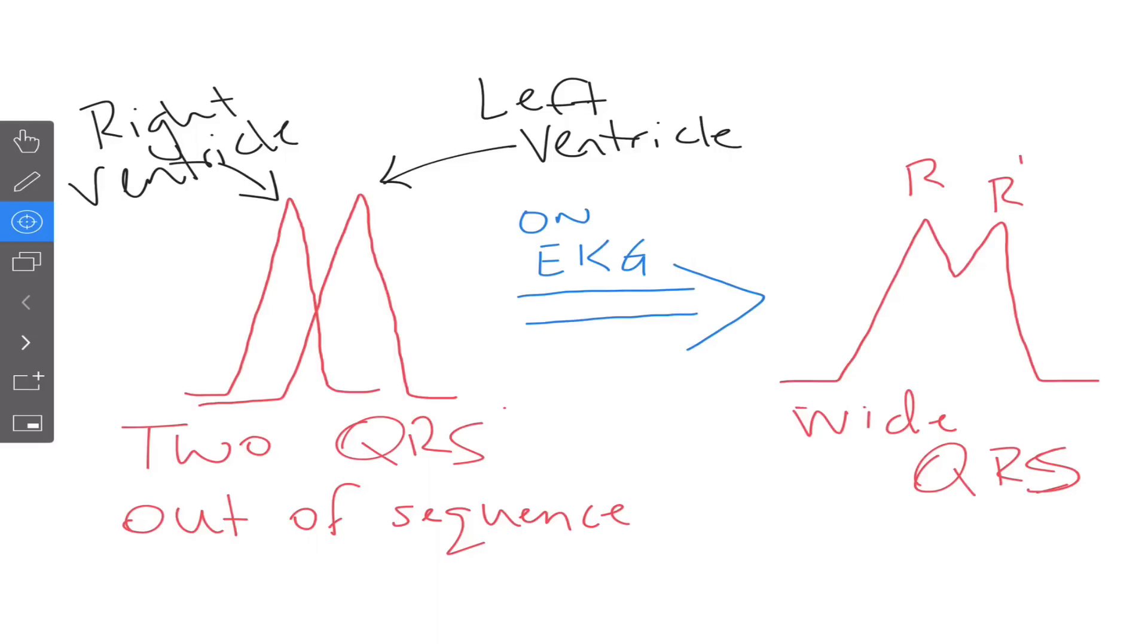And when that happens on our EKG machine, the machine ends up combining those two QRS spikes and makes this rabbit ear appearance that we call R and R prime. And it gives us our textbook signature of wide QRS.